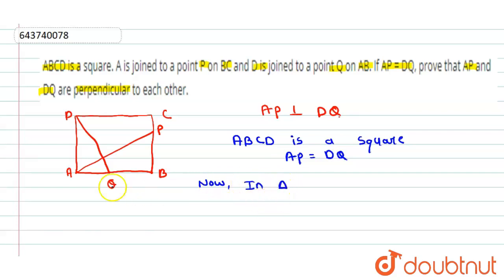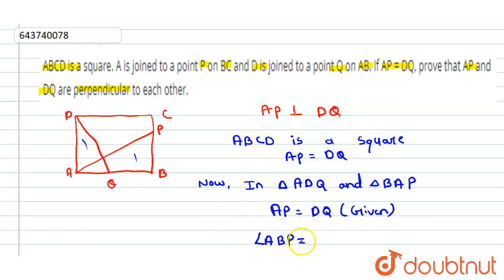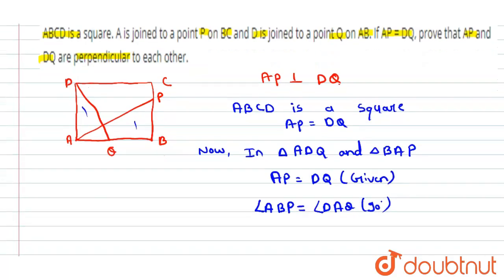In triangle ADQ and triangle APB: AP is equal to DQ (given), and angle ABP is equal to angle DAQ — both 90 degrees, because all angles of a square are 90 degrees.